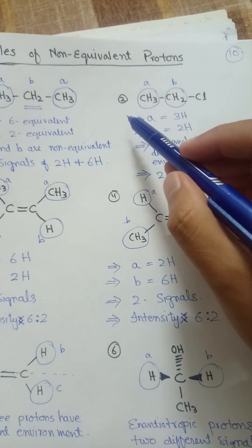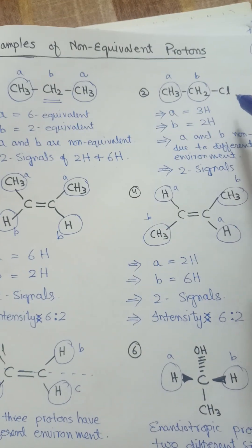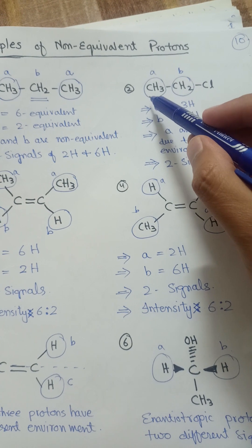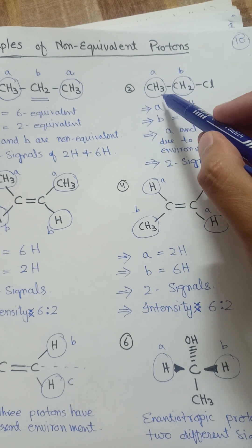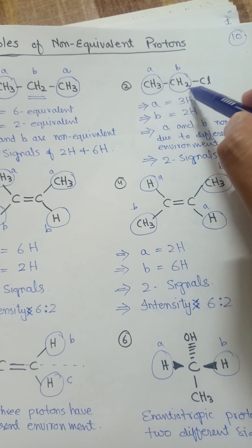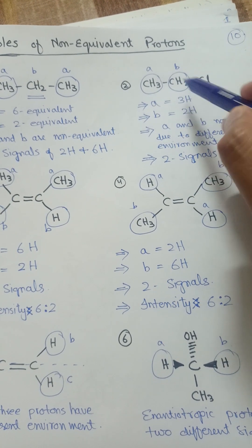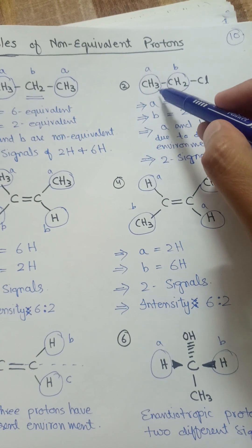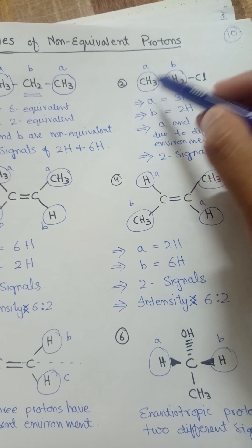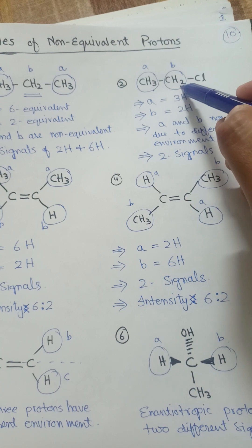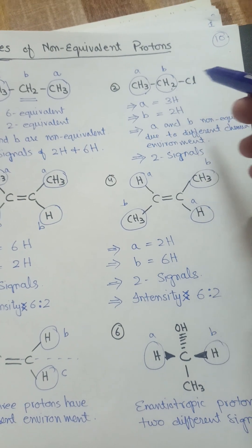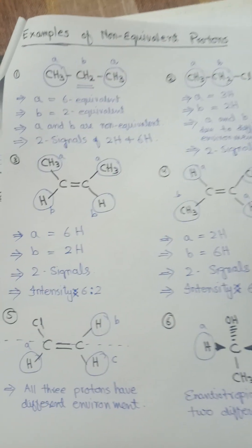Here is another example of ethyl chloride, in which these three protons are different from these two methylene group protons. So these three protons will produce one signal and these two protons will produce another signal, giving two signals in total.